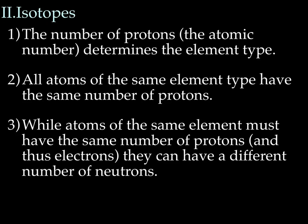So while atoms of the same element must have the same number of protons and thus the same number of electrons, they can have a different number of neutrons. Remember, neutrons are neutral. And so while with protons and electrons you have to have the same amount so their charges can cancel out, that's not the case with neutrons.